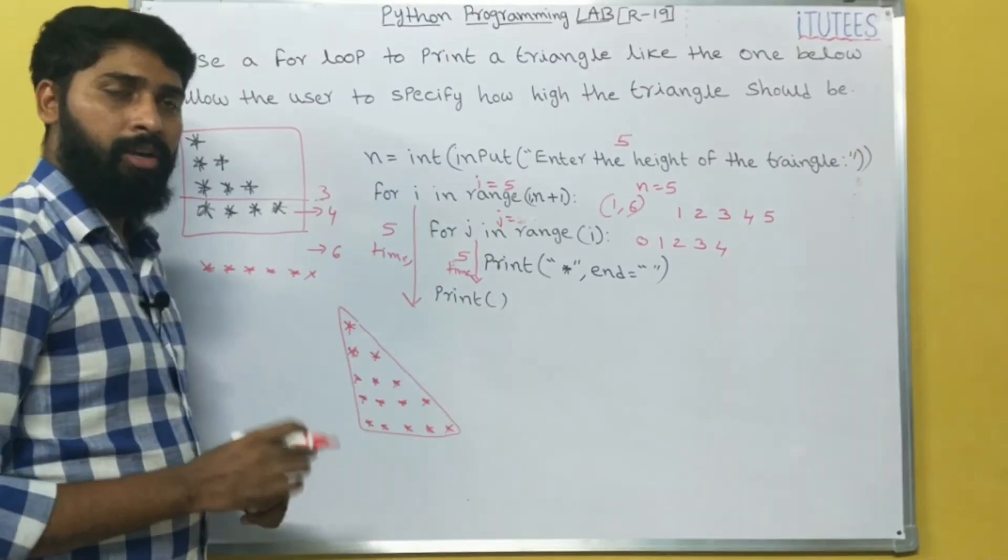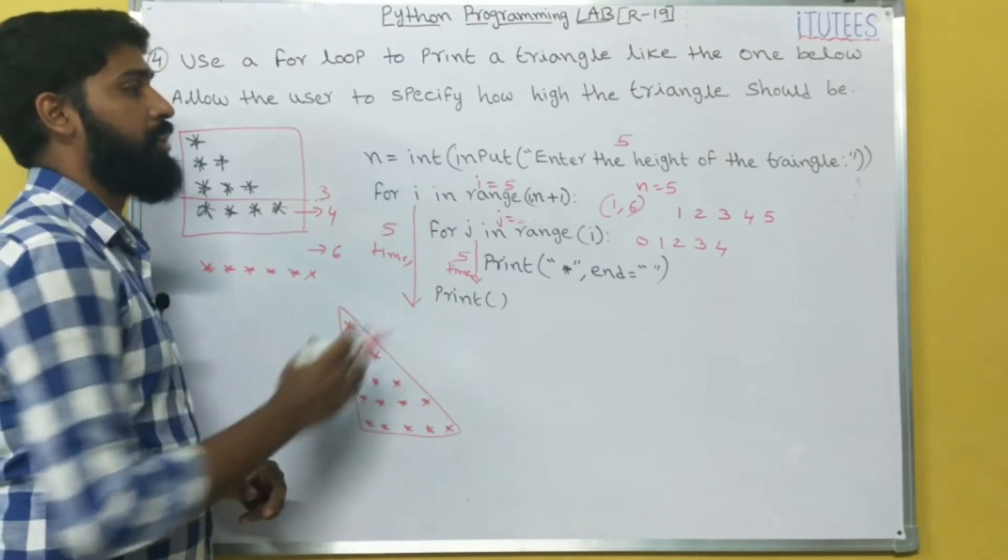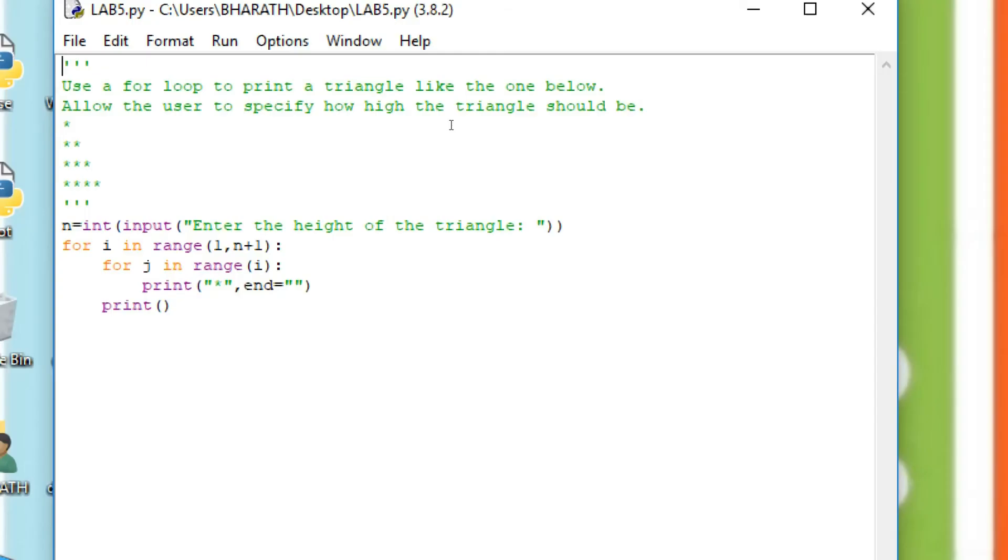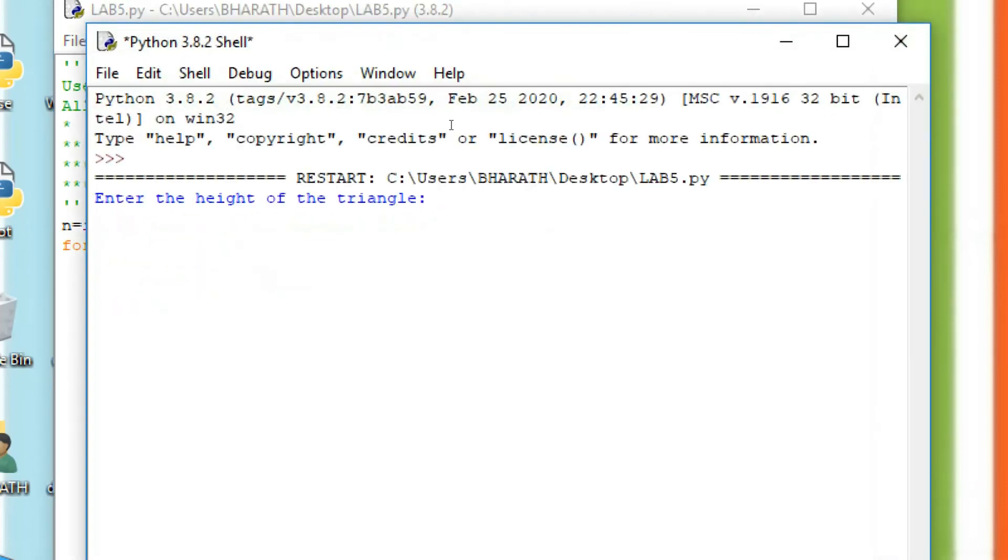So this is the track. I hope you all understand how we can solve this problem. Now we see the execution of the program. Enter the height of the triangle, enter 10. So that is a triangle.